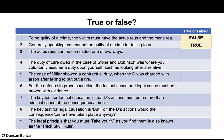Generally speaking, you cannot be guilty of a crime for failing to act — that is true. For an omission, a failure to act, a legal duty must be established in law, either by precedent or statute. The actus reus can be committed one of two ways: by the defendant committing an act or an omission.